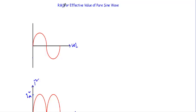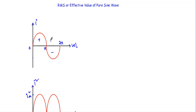In this video I will show you how to calculate the RMS or effective value of a pure sine wave. This is a pure sinusoidal alternating current — it has a positive half cycle and a negative half cycle. During the interval 0 to T/2 the current goes through the positive half cycle, and during T/2 to T it goes through the negative half cycle. Now we have to calculate the RMS value of that sinusoidal current.